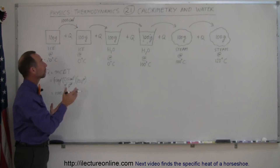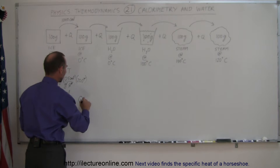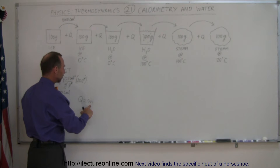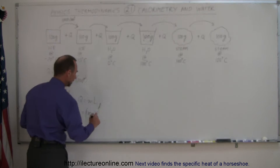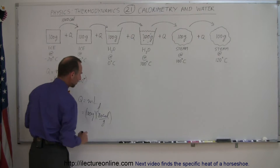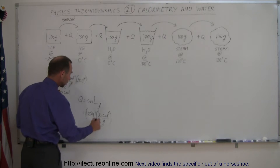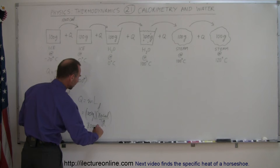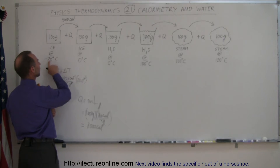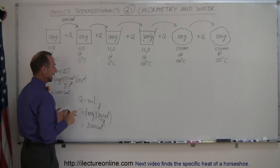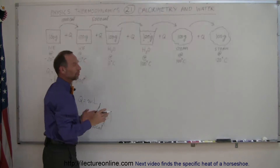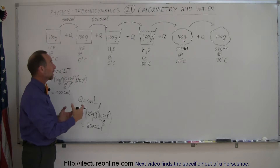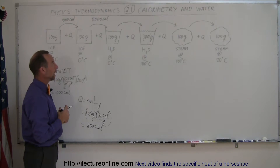To melt the block of ice, we use Q = mLf, where Lf is the latent heat of fusion. With 100 grams and Lf = 80 calories per gram, there's no temperature dependency — grams cancel out — giving us 8000 calories. It only takes 1000 calories to raise the ice from -20°C to 0°C, but 8000 calories to melt it, which is why ice is such an effective cooling mechanism.